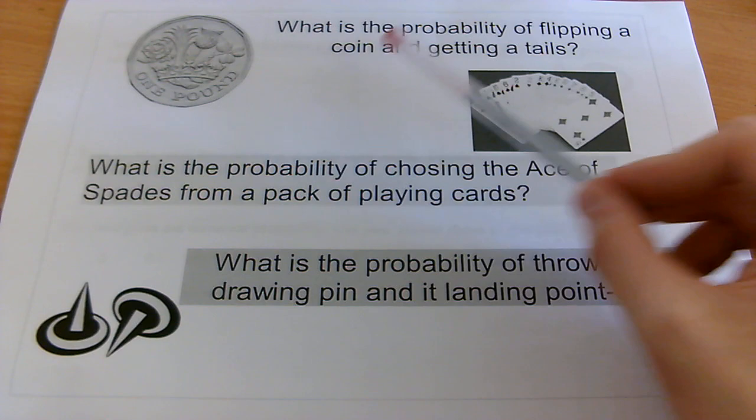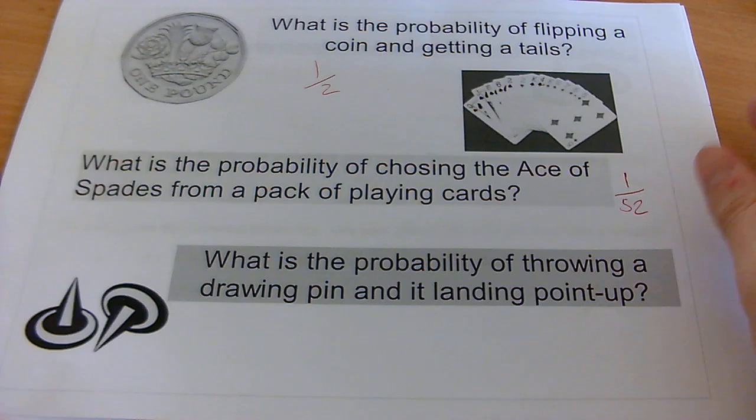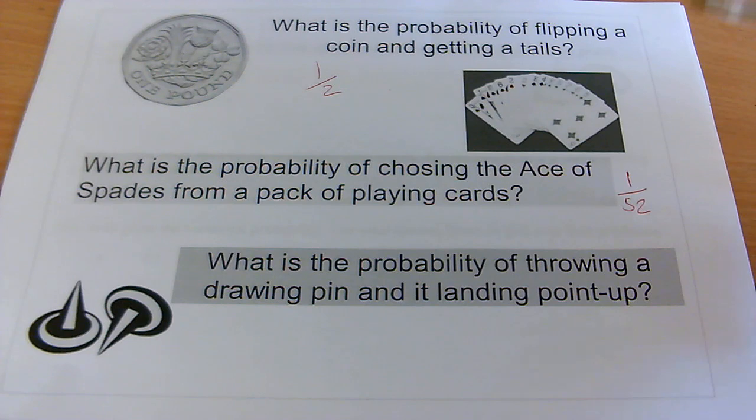It's pretty straightforward to answer the question here. Probability of flipping a coin and getting a tail, well obviously we know that that's going to be 1 out of 2. The probability of choosing an ace of spades from a pack of playing cards, well, there's only one of those in the whole deck and there's 52 in total, so we say it's 1 out of 52. These two are pretty easy because they're very predictable events. We know what happens to coins, we know what happens to cards.